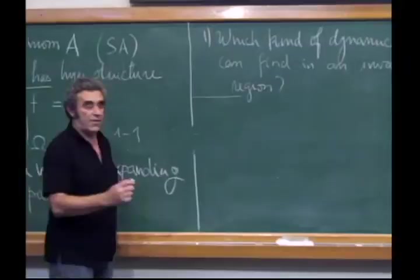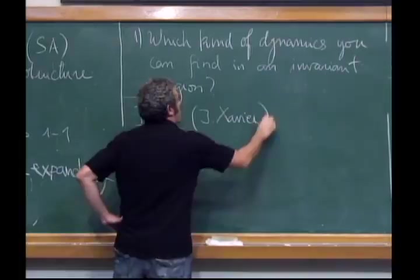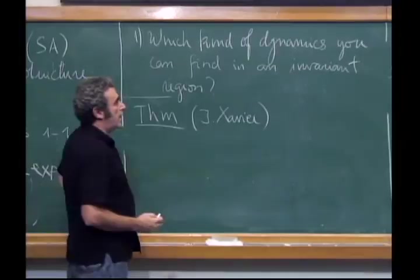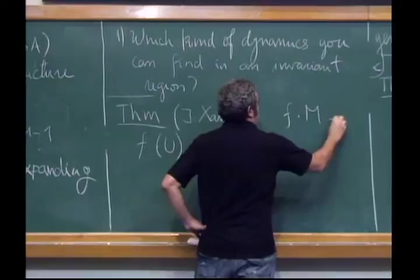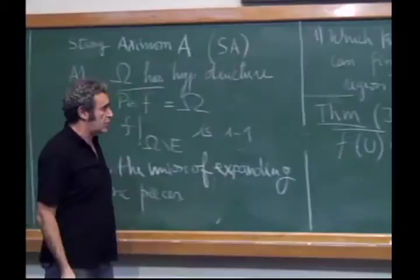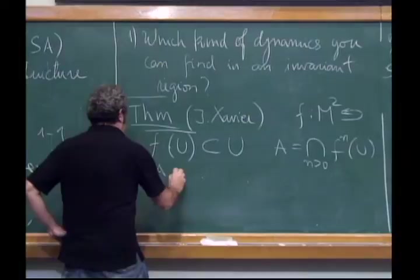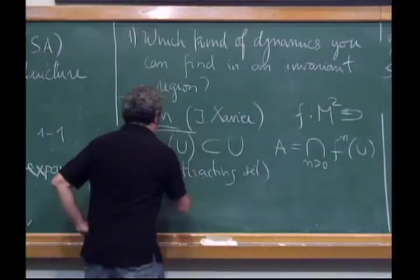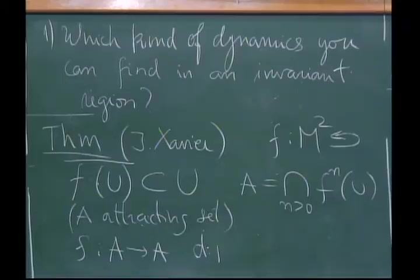The answer comes from a theorem we proved with the same colleagues and also with Juliana Xavier, who is working with us now. We prove that if you have a map f on an open set in a 2-dimensional manifold, with an open set U such that the closure of f(U) is contained in U, and A is the intersection of the iterates of U — an attracting set — and f restricted to A is a d-to-1 covering map from A to A, then f restricted to the immediate basin of A is also a d-to-1 covering.